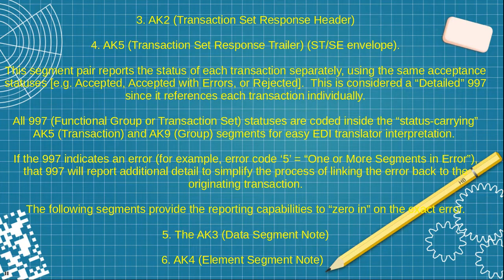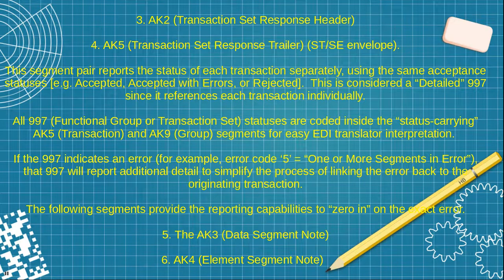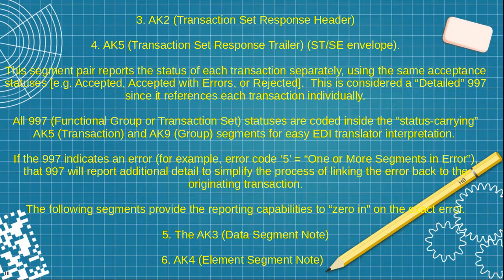All 997 functional group and transaction status codes are inside the AK5 and AK9 segments for easy translator interpretation. If the 997 indicates an error — for example error code 5, or one or more segments in error — the 997 will report additional details to simplify the process of linking the error back to the originating transaction. The following segments provide reporting capability to zero in on the exact error: AK3 is the data segment note and AK4 is the element note.